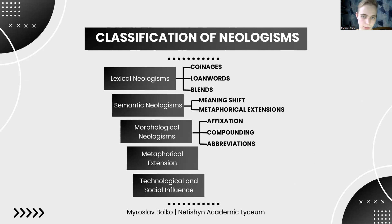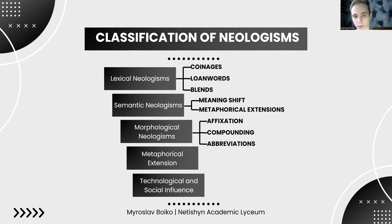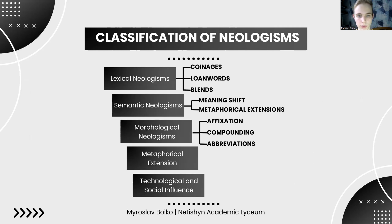Morphological neologisms are words created through common word formation processes. Affixation involves adding prefixes or suffixes — for example, selfie from self plus -ie, or unfriend from un- plus friend. Compounding involves merging two words into one, like laptop or smartphone. Abbreviation involves forms from initials, like COVID-19 meaning coronavirus disease 2019, or NFT meaning non-fungible token.